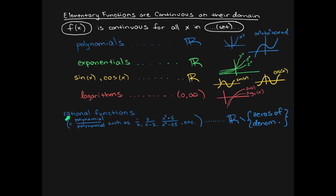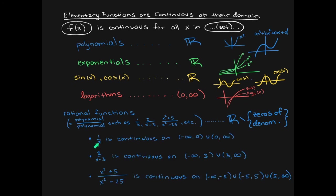Rational functions — a polynomial divided by a polynomial — are continuous everywhere on the real line except at the zeros of the denominator. For example, one over x is continuous everywhere except x equals zero. Two over x minus three excludes x equals three. And a function whose denominator is zero at plus or minus five excludes both negative five and positive five.